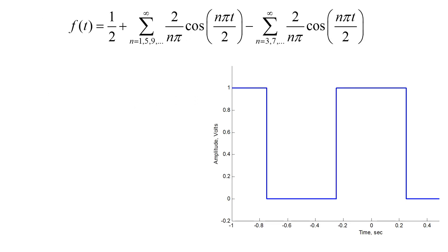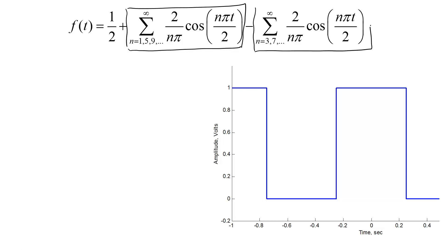Mr. Fourier says that this function is equal to a constant, 1 half, plus an infinite number of sinusoids of this form, minus an infinite number of sinusoids of this form. However, what Mr. Fourier means by equals may not be what you think it means.